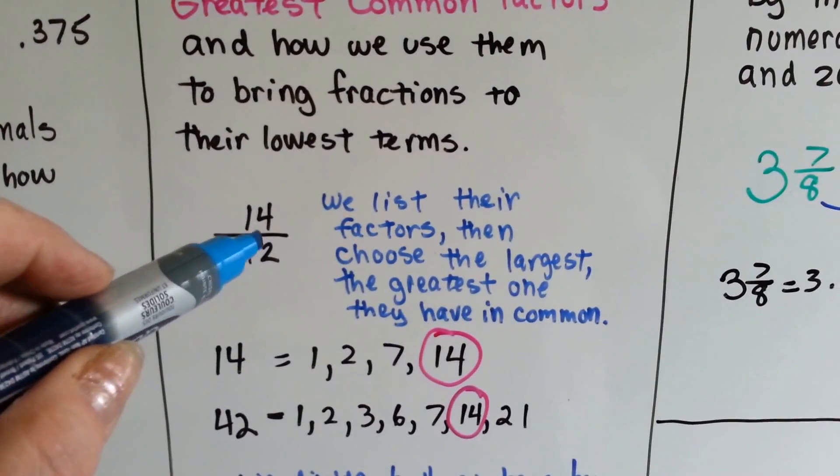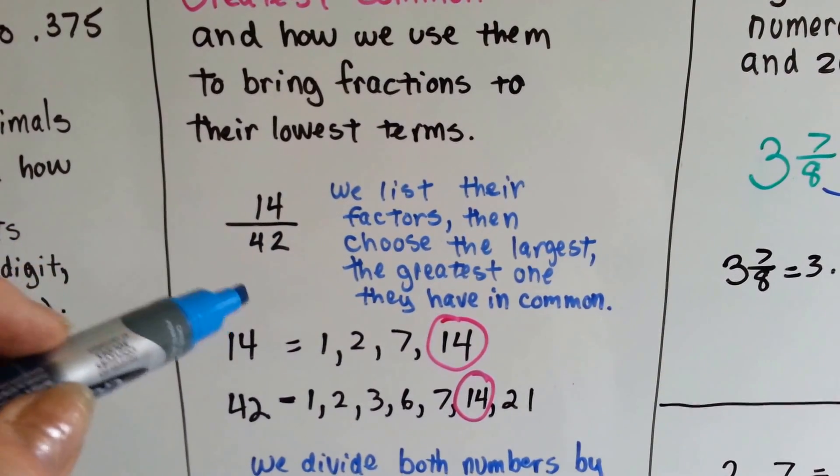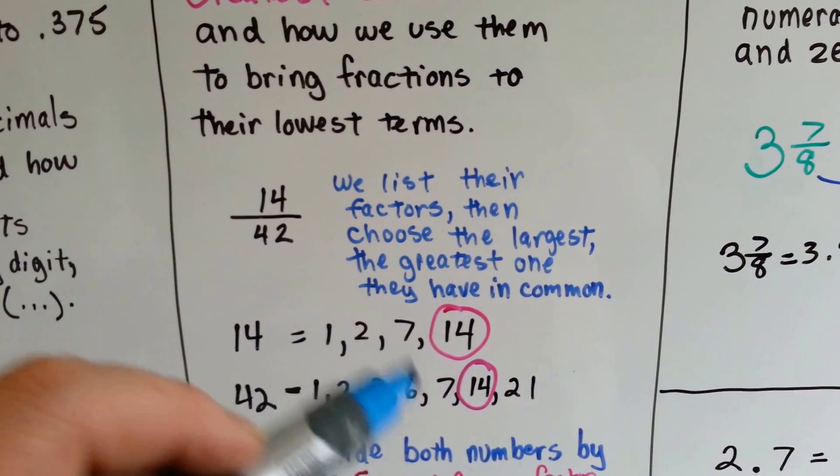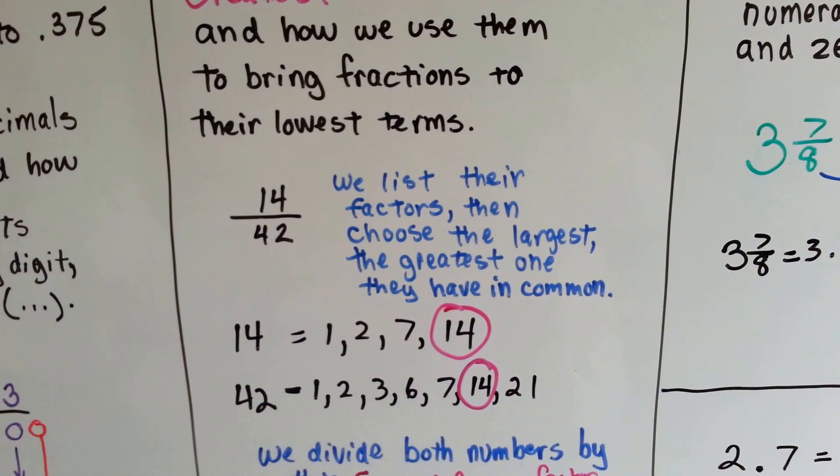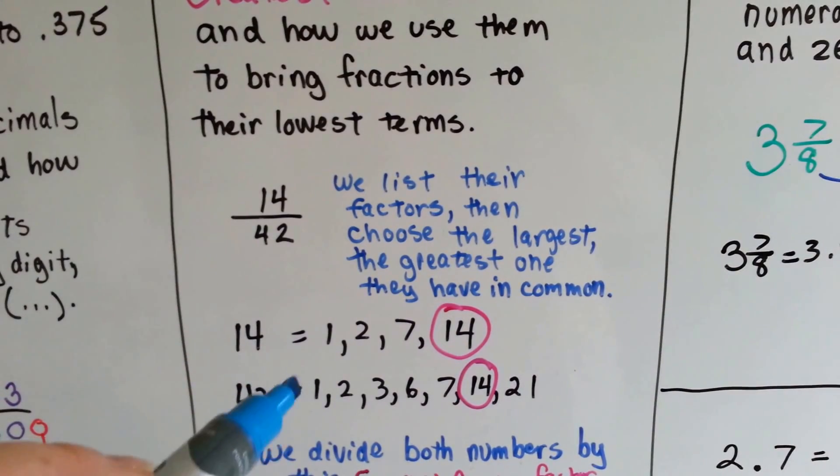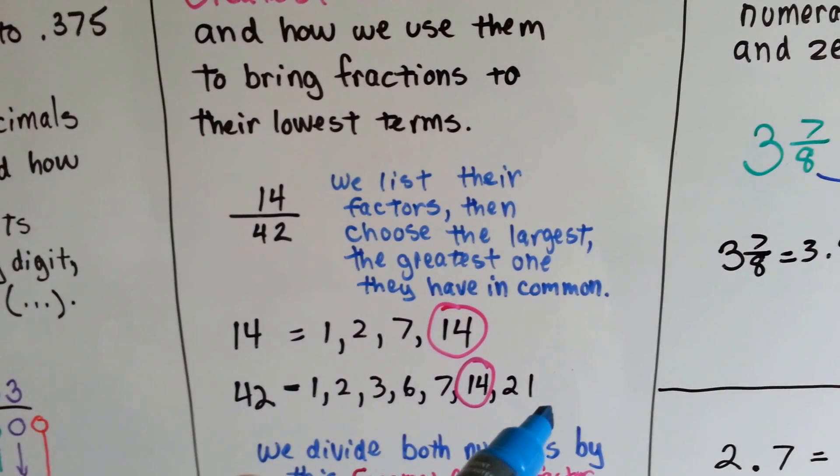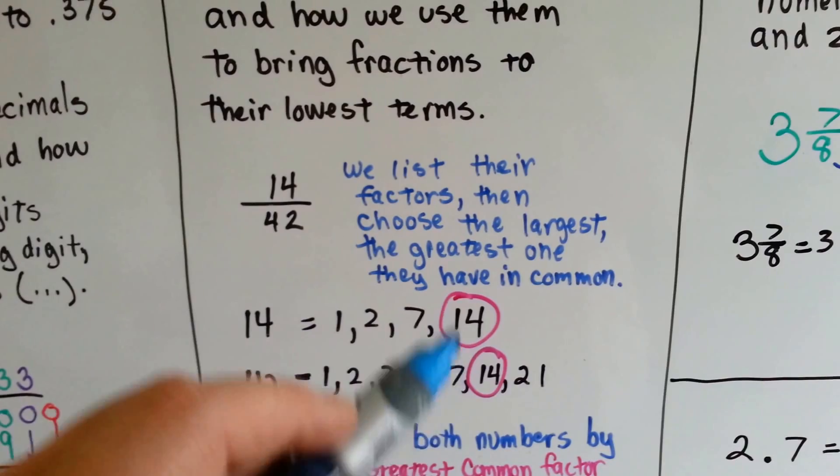14/42, we list their factors and then choose the largest, greatest one they have in common. So for 14 and 42, we list all their factors. 14 has 1, 2, 7, and 14. 42 has 1, 2, 3, 6, 7, 14, and 21.